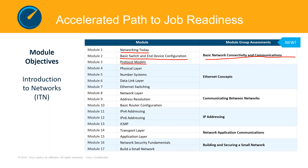Modules 4, 5, 6 and 7 talk about Ethernet concepts. We're going to look at the physical layer, the number system — we'll do a little bit of calculations, but very interesting. We're going to look at the data link layer and understand what Ethernet switching is. All of these are under the Ethernet concepts.